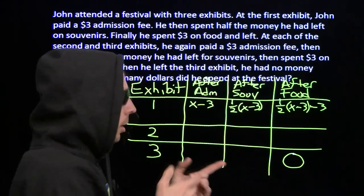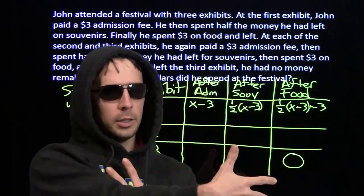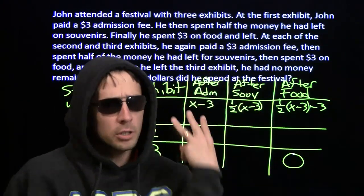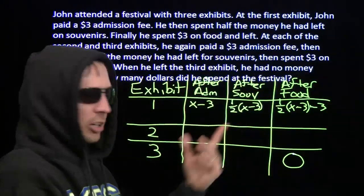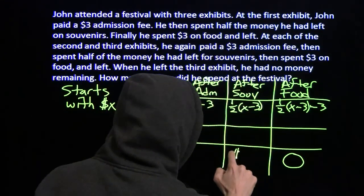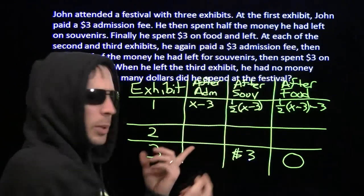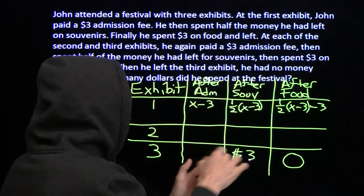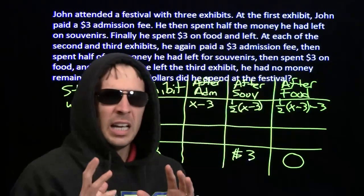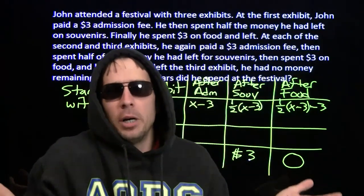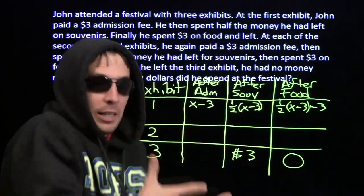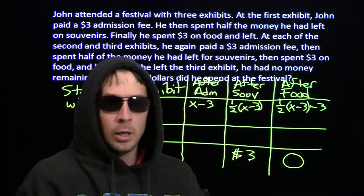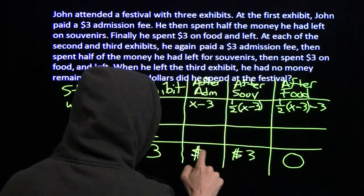If he has zero at the end, that means he only had three dollars when he walked in to buy the food in the third exhibit. We can go back and say: after he got done with the souvenirs in the third exhibit, he must have only had three bucks left, because when he spent those three bucks on food, he was done. He must have had three dollars after souvenirs in the third exhibit. If he only had three dollars after souvenirs, and he spent half his money on souvenirs, the other half was three — so the amount he had before buying any souvenirs in the third exhibit was six bucks.